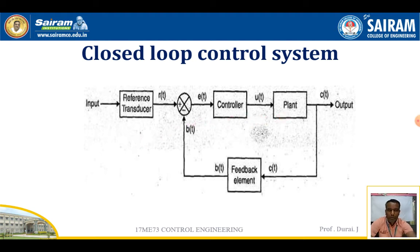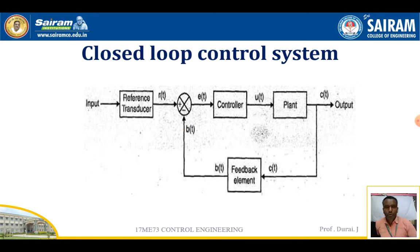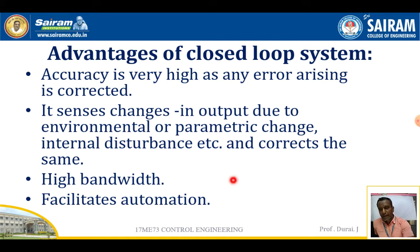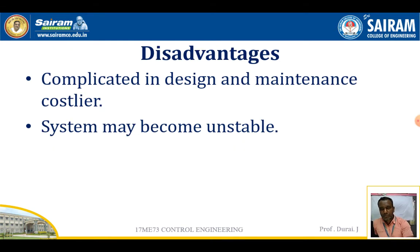The feedback element provides the error signal, and these are the key points to remember in the closed-loop control system. The advantages of the closed-loop control system are: accuracy is very high, it senses changes in output due to environmental and parametric changes, internal disturbances, and corrects them. It is not affected by external disturbances, bandwidth is high, and it facilitates automation systems.